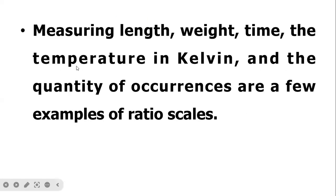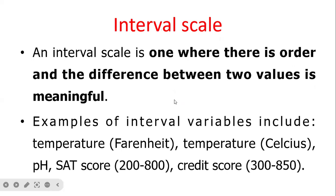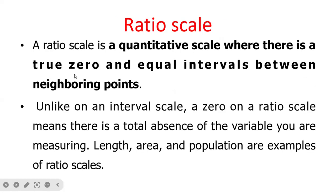Measuring the length and weight, the temperature in Kelvin, and the quantity of occurrence are few examples of ratio scales. The ratio scale is a quantitative scale where there is a true zero and equal intervals between neighboring points. Unlike an interval scale, zero on a ratio scale means there is a total absence of the variable you are measuring. Length, area, and population are examples of ratio scales.